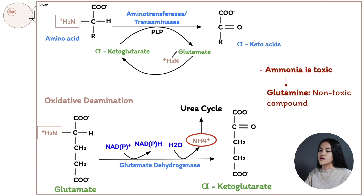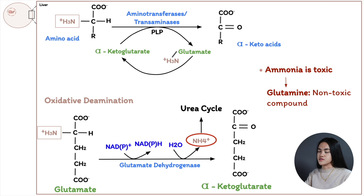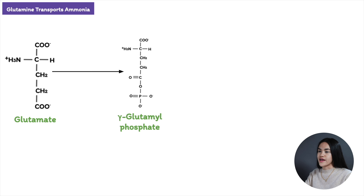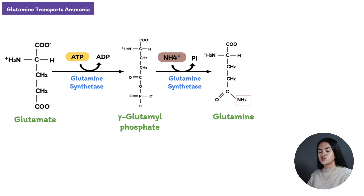Ammonia is converted to a non-toxic compound for transport. A non-toxic form of ammonia from muscle and other tissues is glutamine. Ammonia is combined with glutamate to generate glutamine, catalyzed by glutamine synthetase. This occurs in two steps and requires ATP: first, glutamate and ATP react to form ADP and a glutamyl phosphate intermediate, which then reacts with ammonia to produce glutamine and inorganic phosphate.